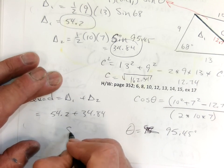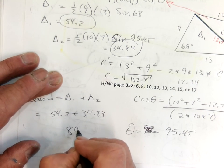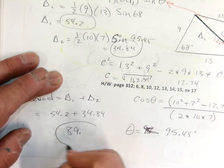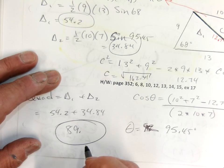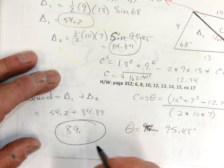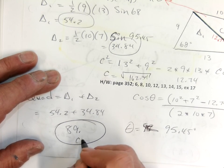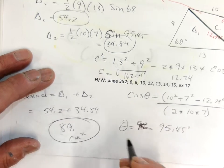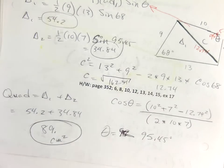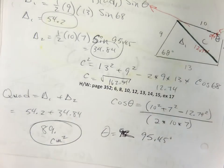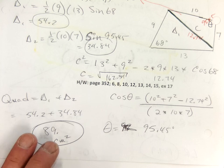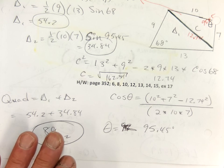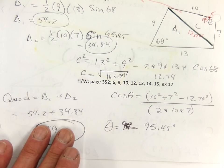So the total area of the quadrilateral equals triangle 1 plus triangle 2 — that's 54.2 plus 34.84 — and I get an answer of about 89 centimeters squared. Okay, great. That was a long lesson, sorry guys. But we still have plenty of time to get some stuff done.